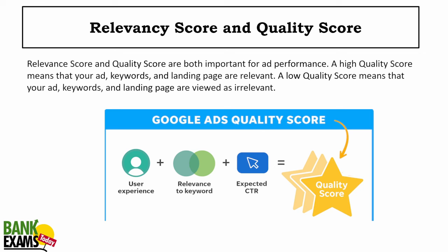Relevancy score and quality score: on Google's ad platform, a high relevancy or quality score means your ad will rank higher. Quality score is calculated based on user experience, relevance to keywords, and expected CTR. If your expected CTR is high, your keywords are relevant, your website is fast, and the user experience is good, your quality score will be higher.